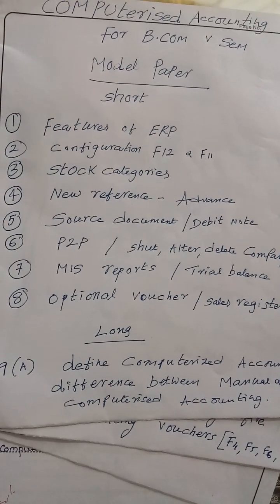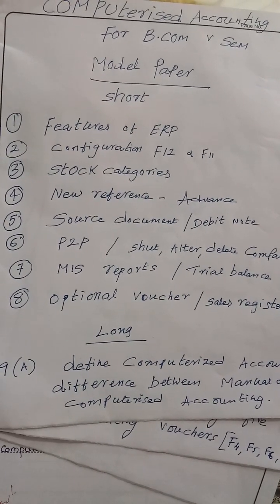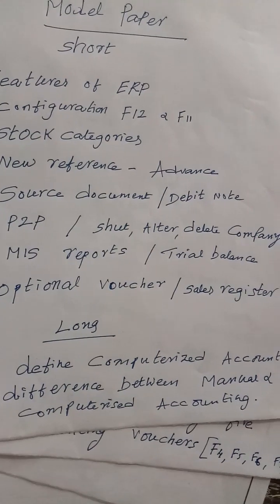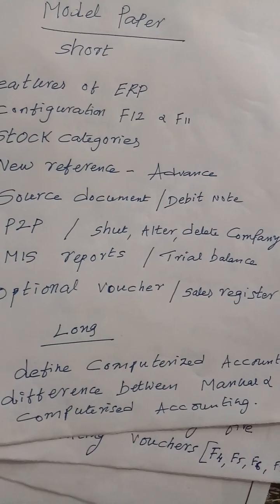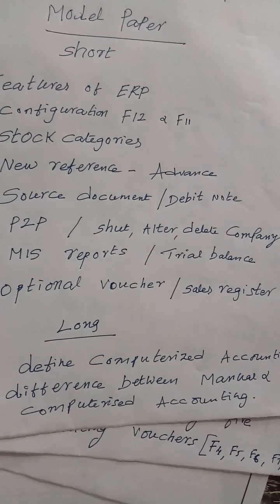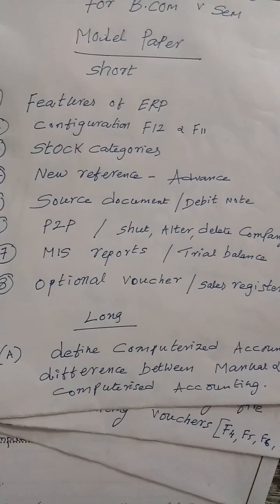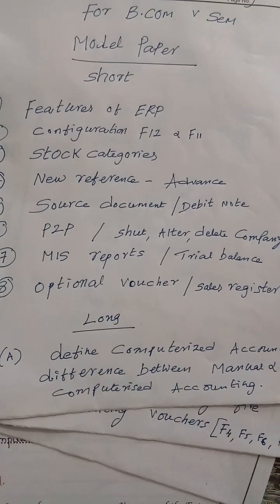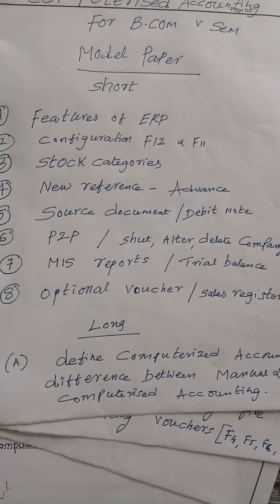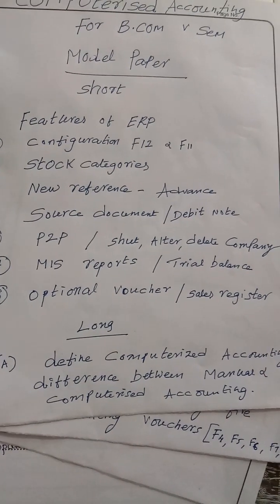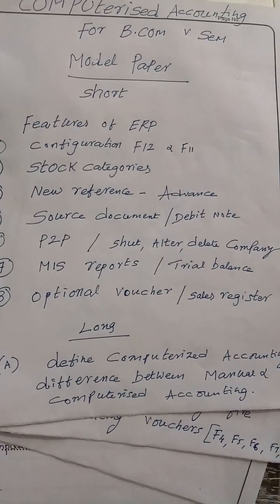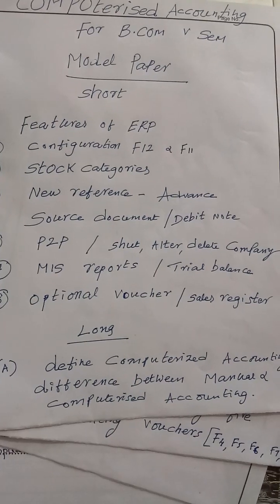Then procure to pay — this is a topic in unit number one. If the shut question is not given, it will be like: shut, alt, delete company, and MIS reports. If MIS reports is not given, trial balance will be given, or cash book will be given.